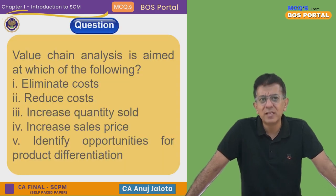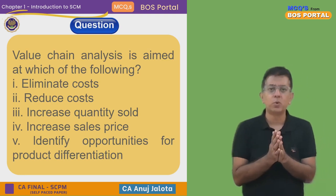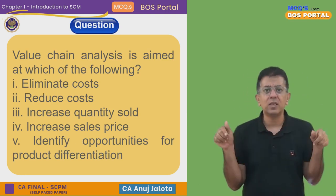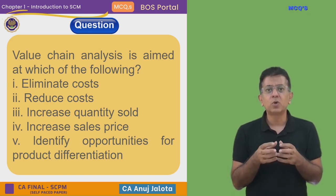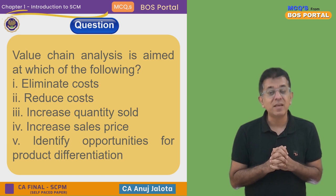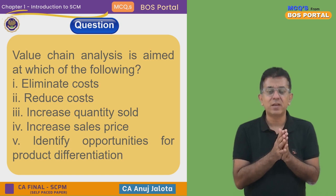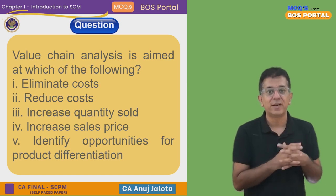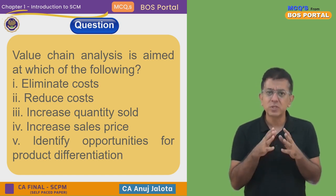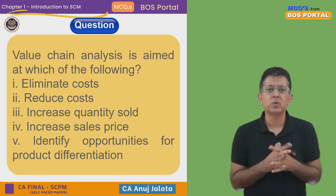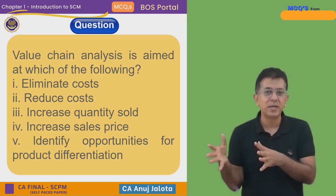Before I give the correct answer, you should know what value chain means. Michael Porter was the gentleman who developed the entire theory of value chain. He said that a company is nothing but a group of activities that it performs. He classified all activities into two types: value-added activities and non-value-added activities. He also classified activities that a manufacturing company performs.